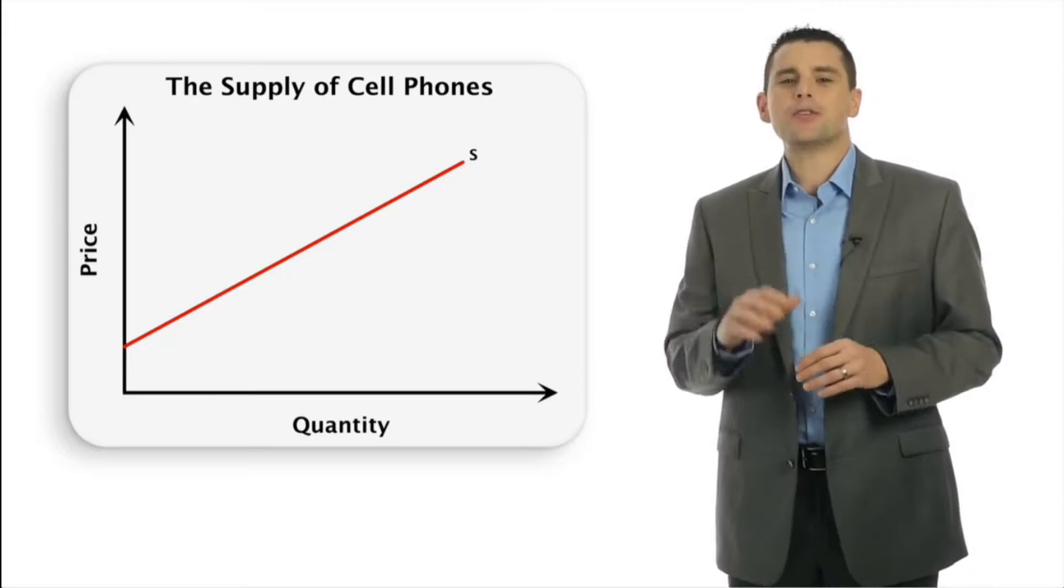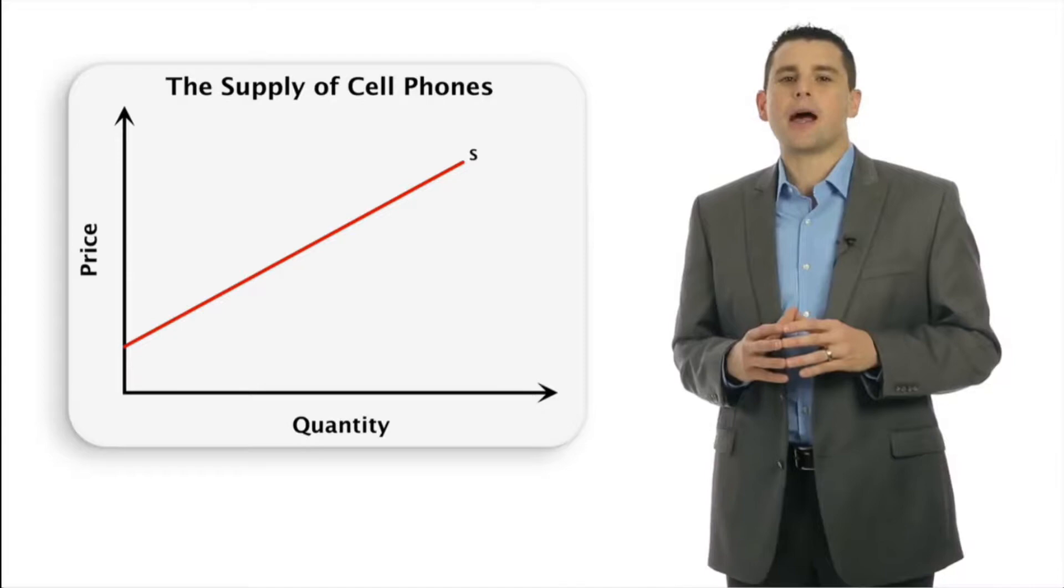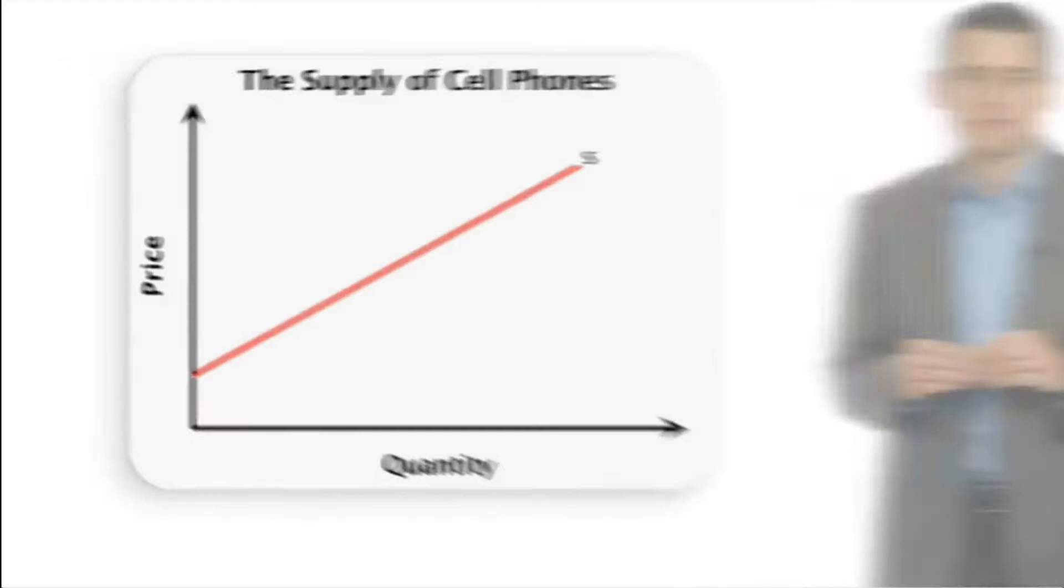Well, begin with the original supply curve S, and suppose a new cell phone company enters the market. The effect of a new seller on market supply is straightforward. More cell phones will be available at any given price.